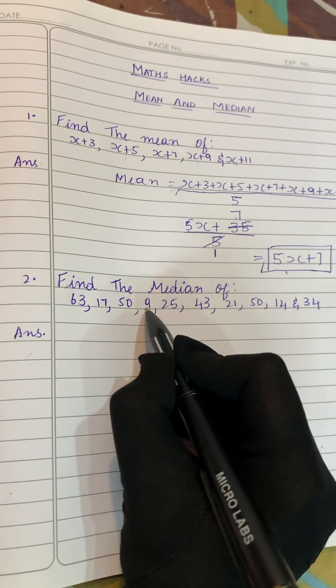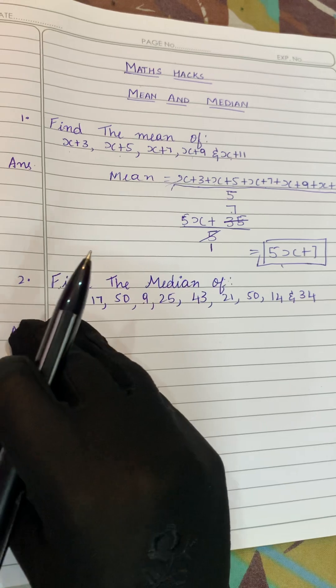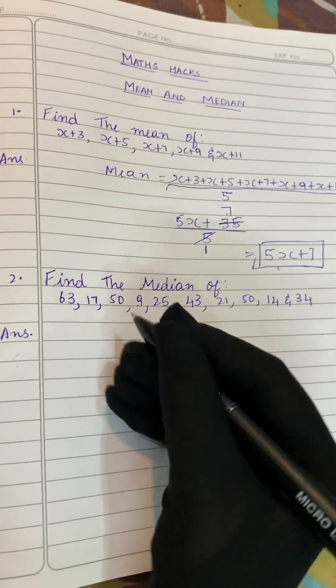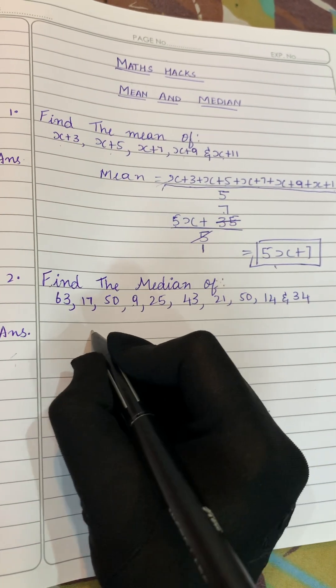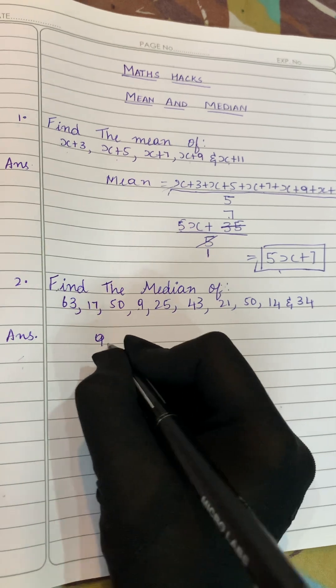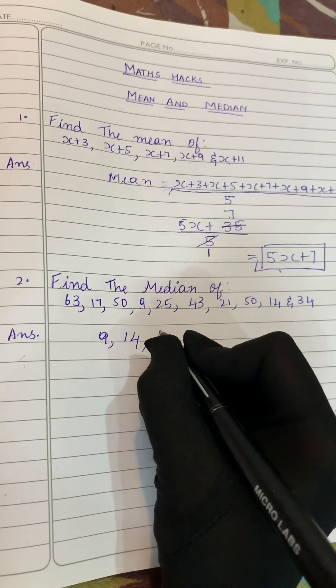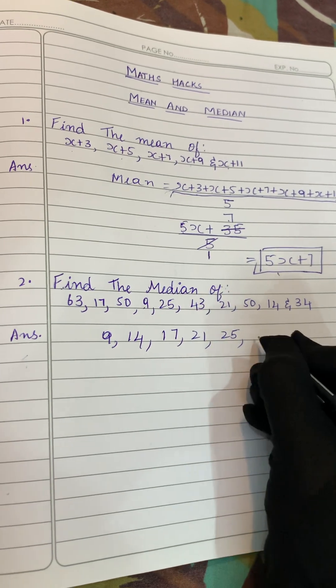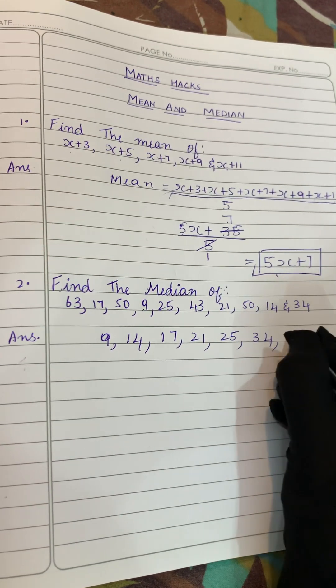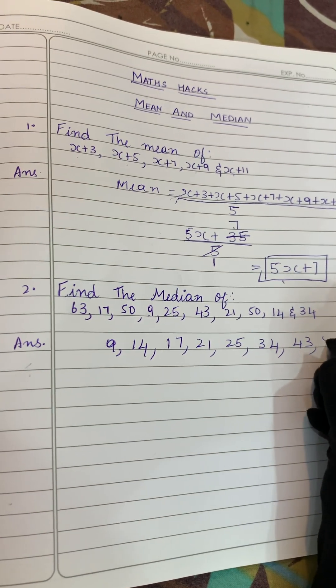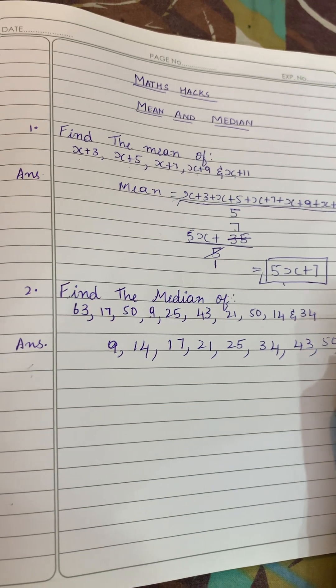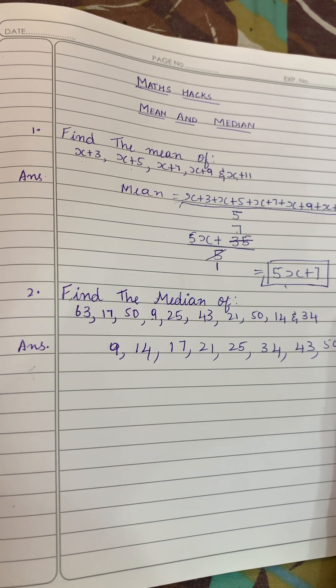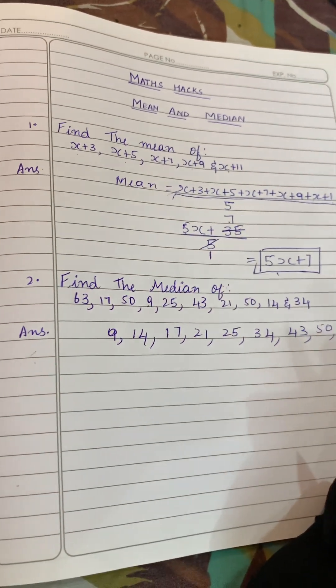Which is the smallest number here? The smallest number here is 9. Then we'll arrange it from smallest to biggest number. So the first smallest number here is 9, after that 14, after that 17, then 21, then 25, then 34, then 43, then 50, 55, and last one is 63.